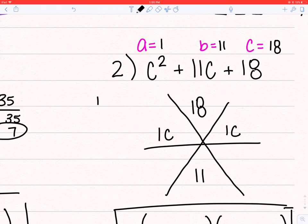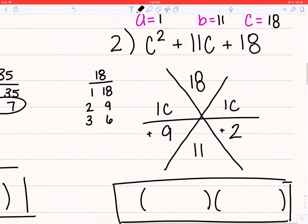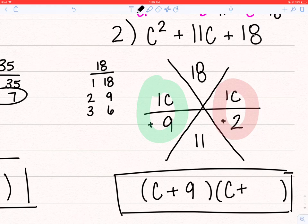Now, my factors of 18, I'll have 1 and 18, 2 and 9, 3 and 6, no 4, no 5, and then they start to repeat. So which two of those will give me a sum of 11, because I've got positive on top, positive on the bottom, 9 and 2. Now, because 1 and 9 do not simplify, I have c plus 9. And because 1 and 2 do not simplify, I have c plus 2.